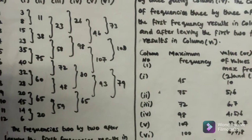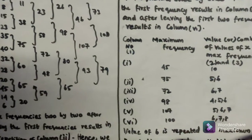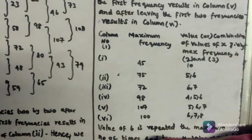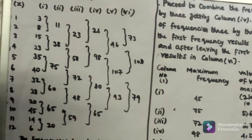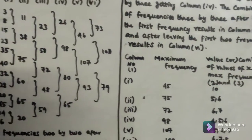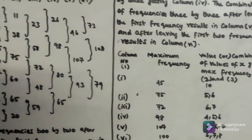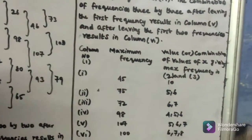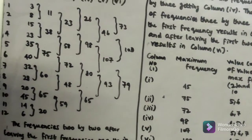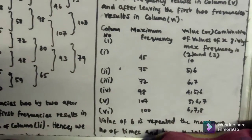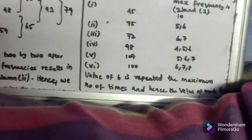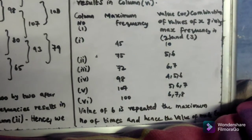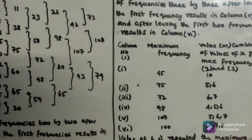Maximum frequency in column 1 is 45. Maximum frequency in column 2 is 75. Column 3 gives 72. Column 4 is 98. Column 5 is 107. Column 6 is 100. Looking at which size value appears most: size 6 is repeated the maximum number of times. Hence, the value of mode is 6.